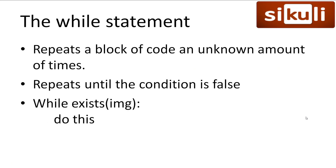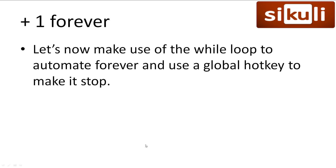Now let's look at while loops. The while loop is used for repeating a block of code until a boolean expression is false — so while the expression is true, keep repeating the code. We commonly use this with the exists function, as it returns true or false depending on whether an image is on screen. Let's modify our script to repeatedly add one forever and stop when we press a global hotkey.